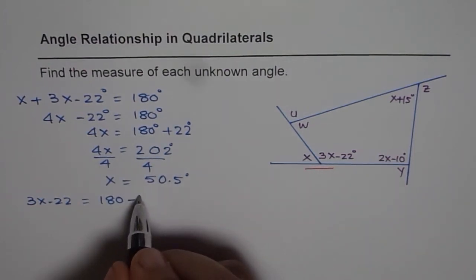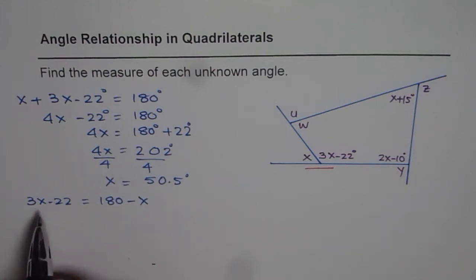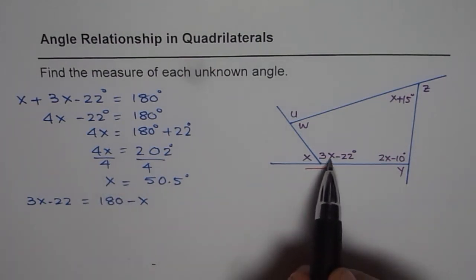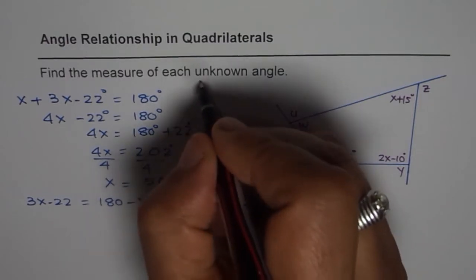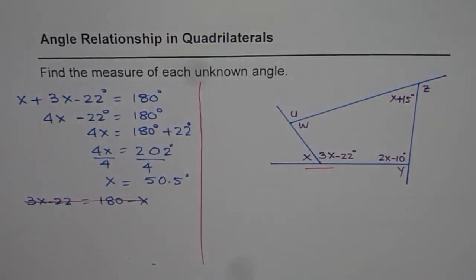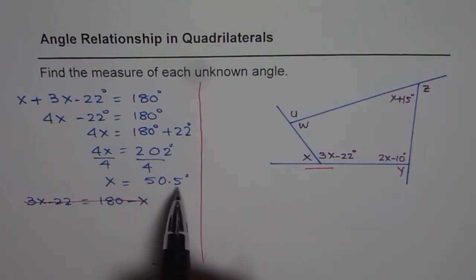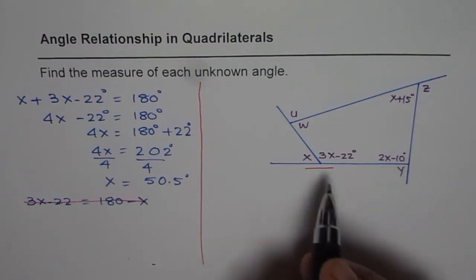Now from here we can find the value, or we could have actually substituted the value of x itself here to find the value of 3x minus 22. So that's a better idea. So what we will do is we will not really solve this once again. Since we know what x is, we can substitute x in all these angles and find all other angles.